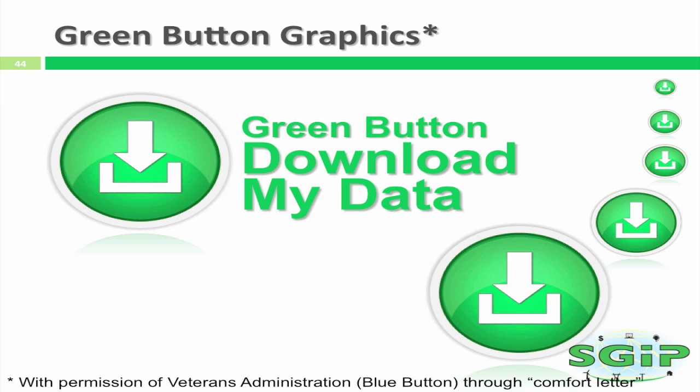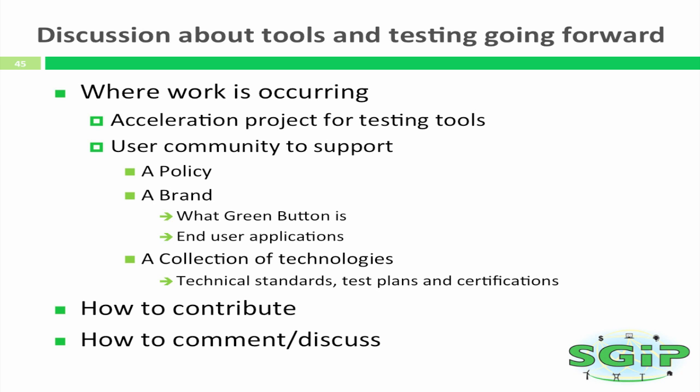Here I'm going to talk about the path forward. The most important resource is people and the communities that will help GreenButton progress. We'd like to accelerate the development of these tools and build a user community to support GreenButton. GreenButton can be thought of as an umbrella: there are the policy aspects, the branding, and a growing awareness of its usefulness. There's also a collection of technologies to support GreenButton, such as the technical standards as well as the test plans and certifications. All of these help support a positive environment so that consumers have regularity and expectations when they get GreenButton data.